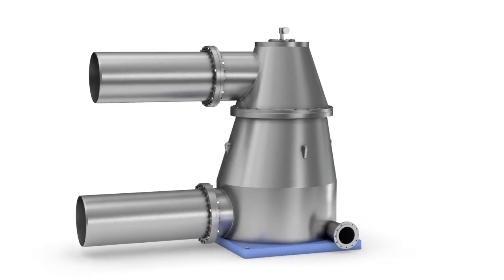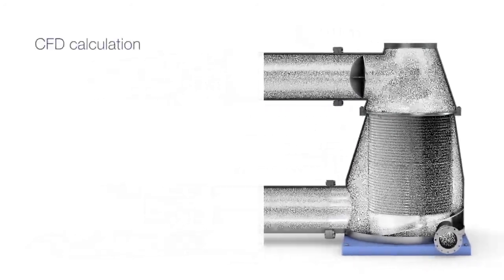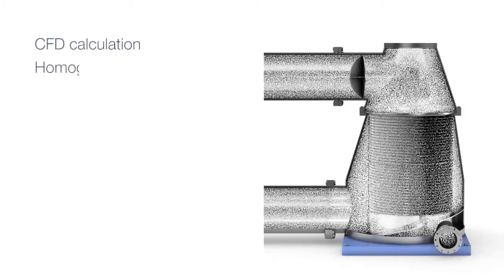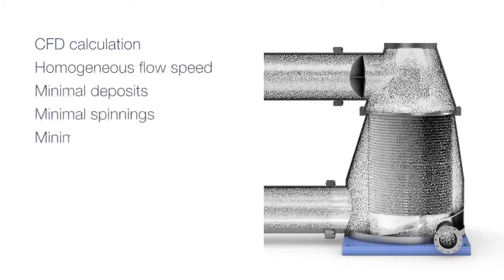IntegraGuard is the screening machine for high quality protection in the approach flow system. Its design based on fluid simulation enables a homogeneous flow speed, prevents deposits and spinnings, and minimizes pulsations.